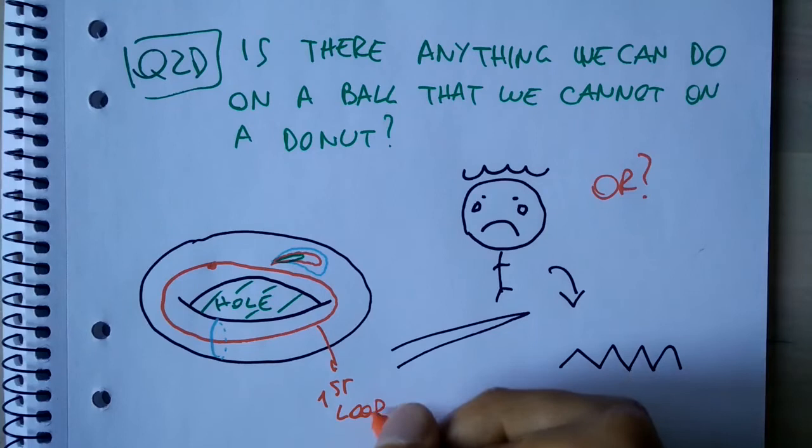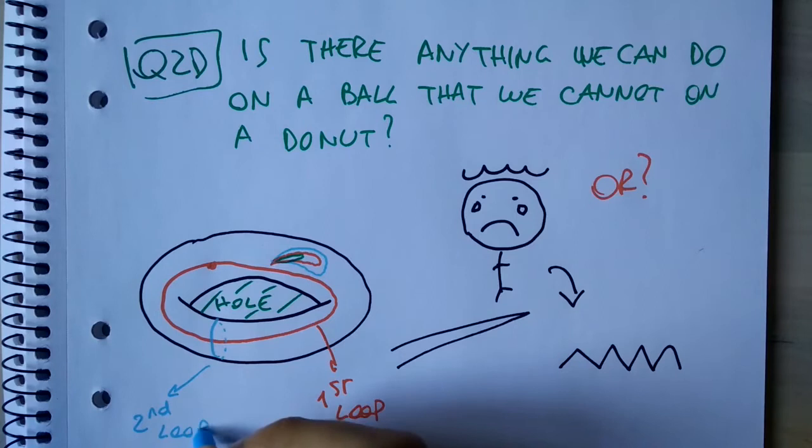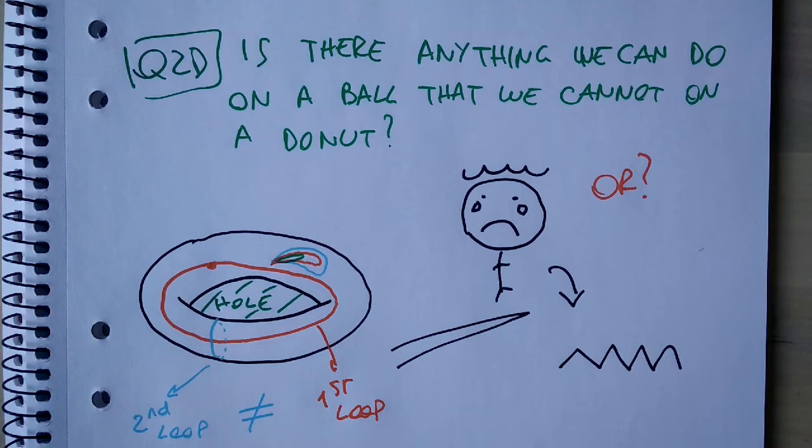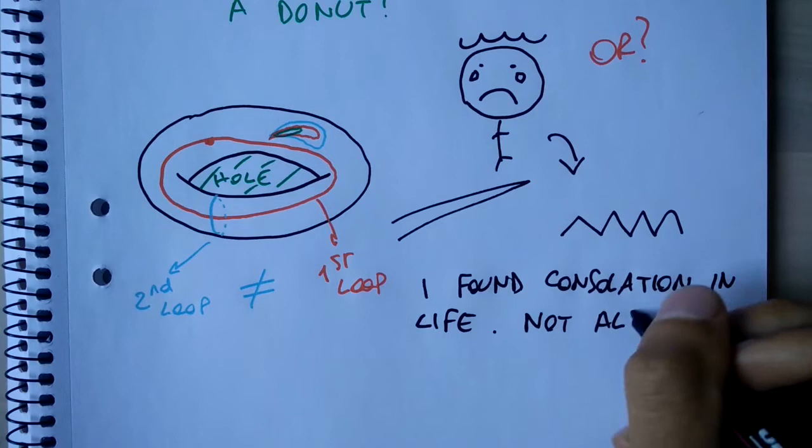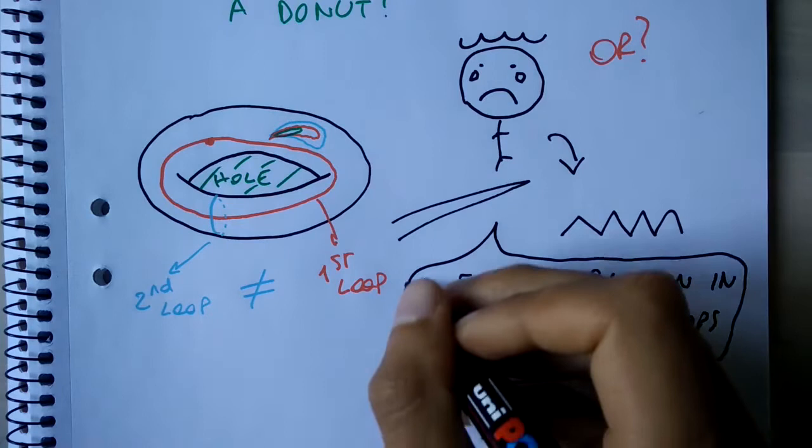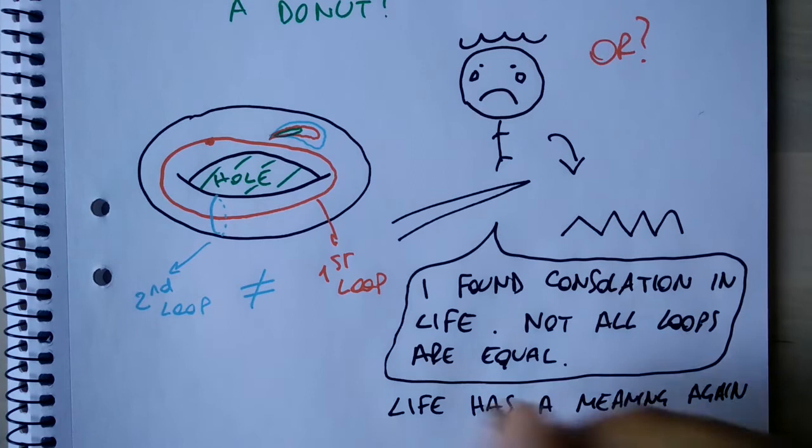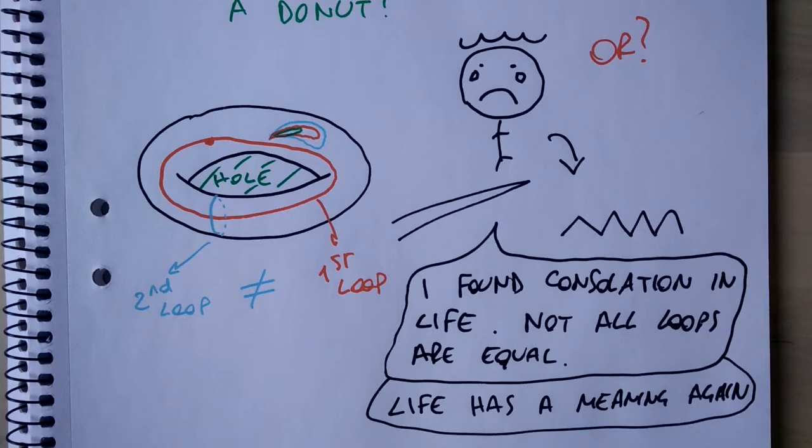We might shrink it a bit, but as soon as we reach the borders of the hole, we can't go further. In fact, either way we choose to go around the donut hole, either the short or the long route, we cannot shrink the loop and remain on the surface. So it looks like, on the donut, not all loops are equal. Some cannot be contracted to a point. And what's more, on the donut there are two different unique ways of making loops, because without breaking them we cannot transform one in the other. So there, this is indeed something that tells apart balls and donuts.